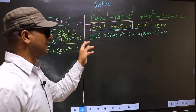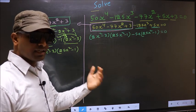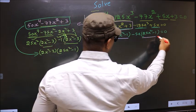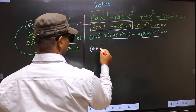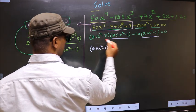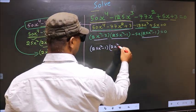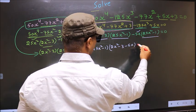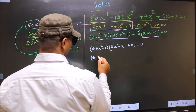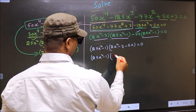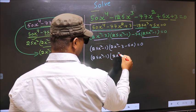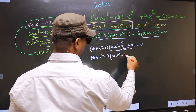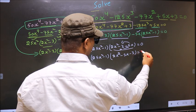From this entire equation, what can be taken out common is 25x² minus 1. So 25x² minus 1 is outside. Over here you are left with 2x² minus 3, and over here you are left with minus 5x, equal to 0. So we now have (25x² minus 1)(2x² minus 5x minus 3) equal to 0.